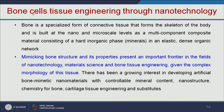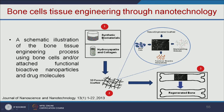We can also engineer bone cells. Bone is a specialized form of connective tissue forming the skeleton. Mimicking bone structure and its properties is an important frontier in nanotechnology and material science. Using synthetic biomaterials made of hydroxyapatite and collagen, which mimic the bone scaffold, and adding bone marrow stem cells, we can regenerate damaged bone.